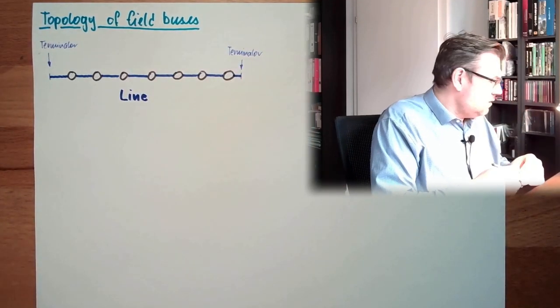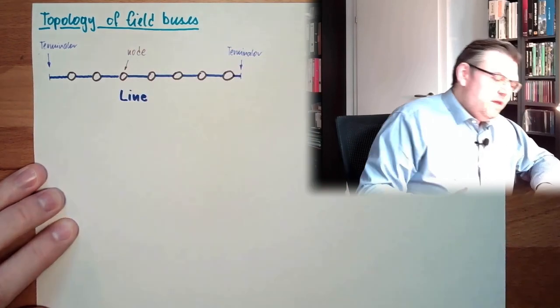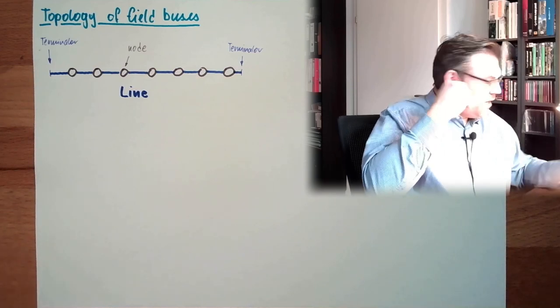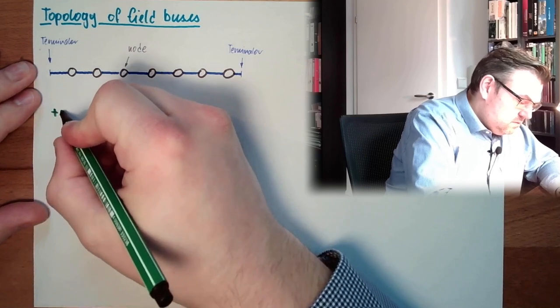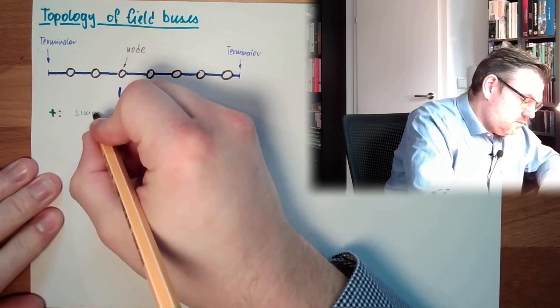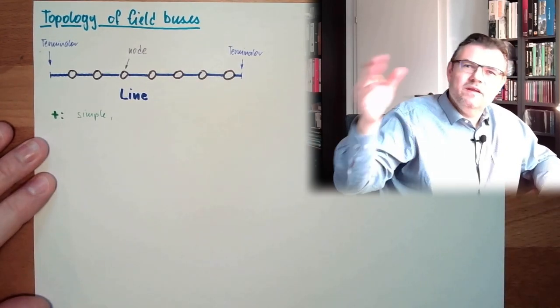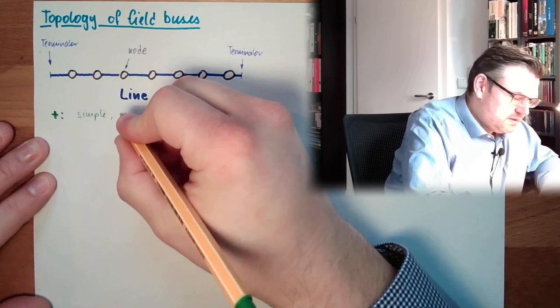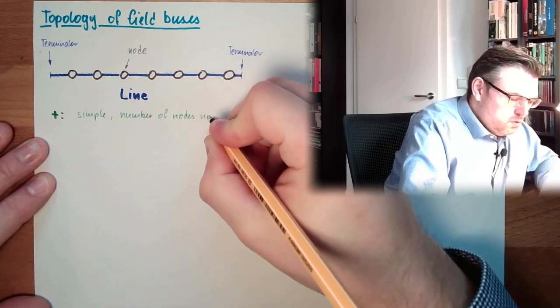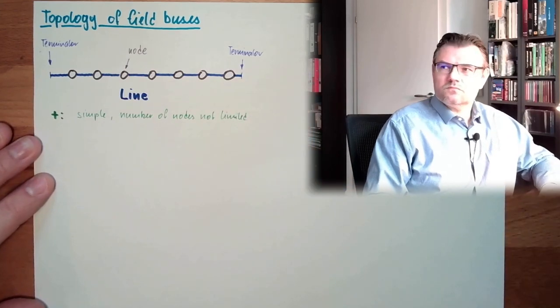Every node is connected to its neighbors, and that's it. That's a line. What are the benefits of a line? It's simple, right? There is an almost infinite number of nodes possible, a right number of nodes, not limited by design. That's the benefits.